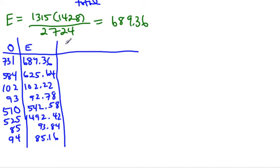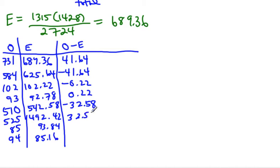Now what we're going to do is we're going to actually do observe minus expected. So we're going to take each of our observed values, subtract off its corresponding expected value. The first one I get 41.64, the next one I get negative 41.64, the next one gives me a negative 0.22, the next one gives me a positive 0.22, the next set gives me a negative 32.58, the next one gives me a positive 32.58, the last set gives me a negative 8.84, and positive 8.84 for the last one.